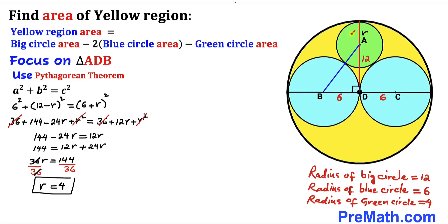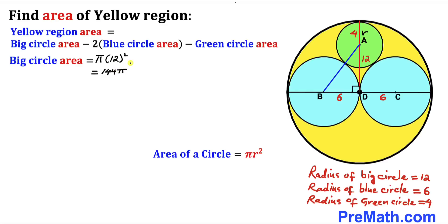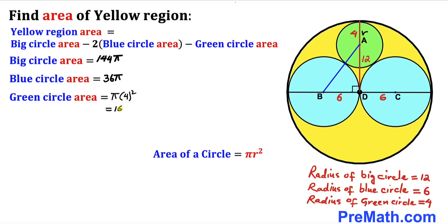Now let's calculate the areas. Using the formula area = πr², the area of the big circle with radius 12 is π × 12² = 144π. The area of each blue circle with radius 6 is π × 6² = 36π. The radius of the green circle is 4, so the area of the green circle is π × 4² = 16π.